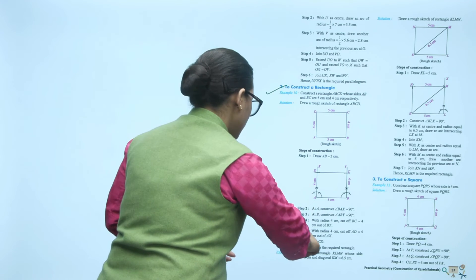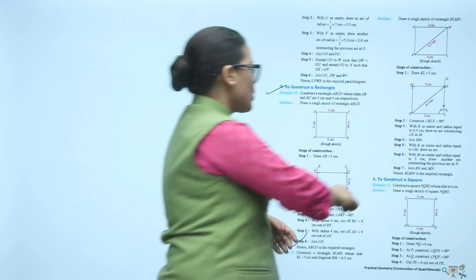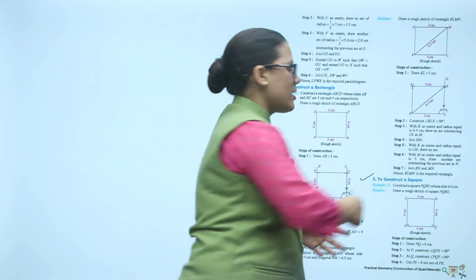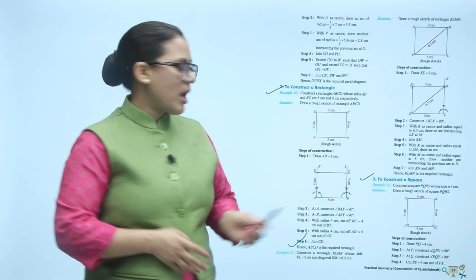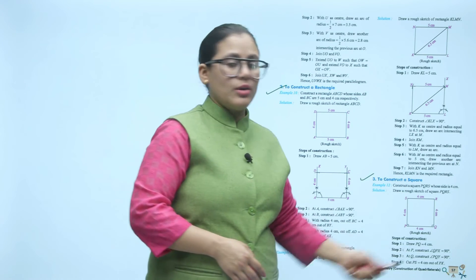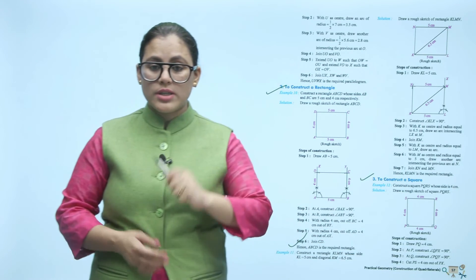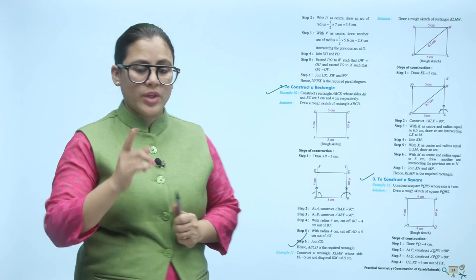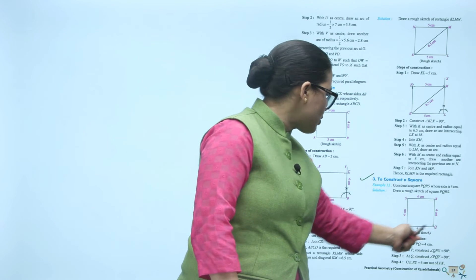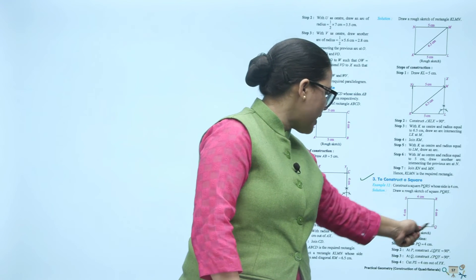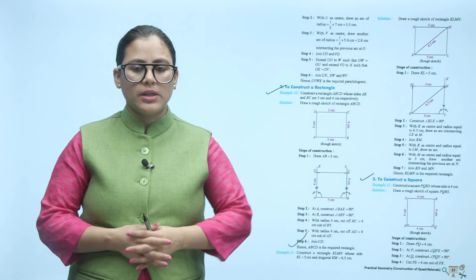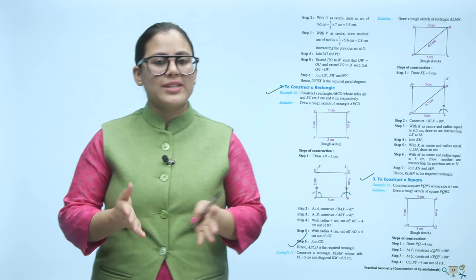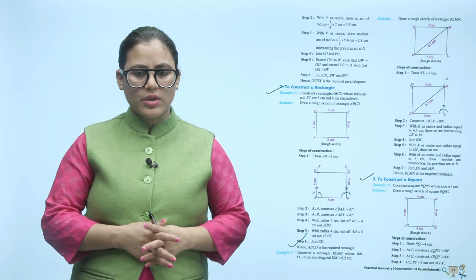Next, construct a square. In a square, all sides are equal. You make 90 degree angles at the base, the same as for a rectangle. So the construction of a square is similar to that of a rectangle.